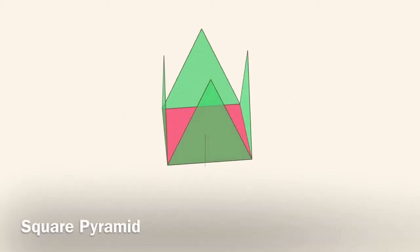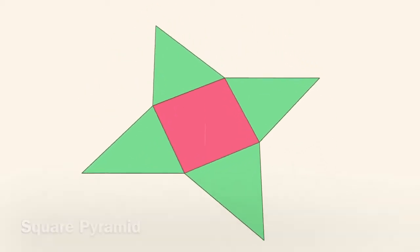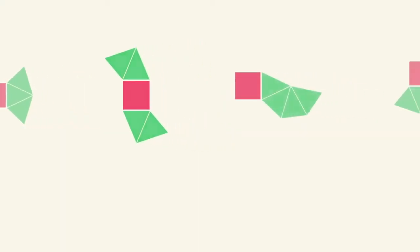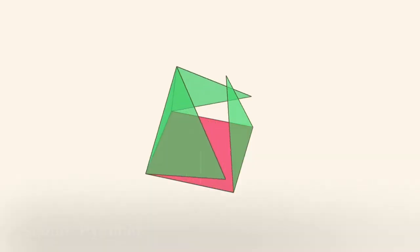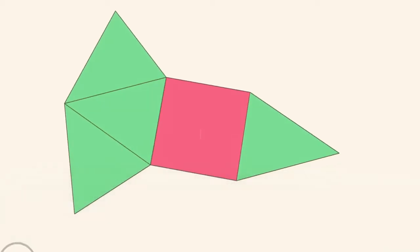Pyramid nets are interesting. Here's a square pyramid. You can see its square base and its four lateral triangle faces. Just like everything else, they can be oriented in many different ways. But they'll always have one square and four triangles for square pyramids.